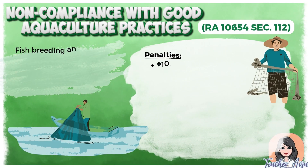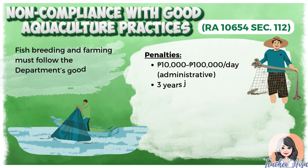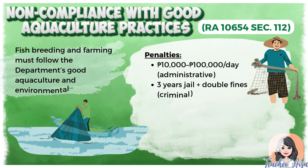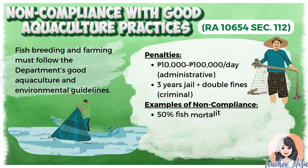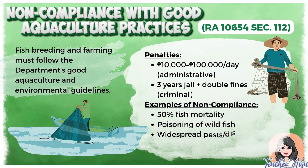Under RA 10654 Section 112, fish farming must follow good aquaculture and environmental guidelines. Violations can lead to daily fines, often 10,000 to 100,000 pesos, or up to 3 years imprisonment with double fines. Non-compliance includes high fish mortality, poisoning wild fish, disease outbreaks, and aquatic pollution.